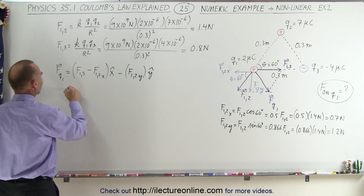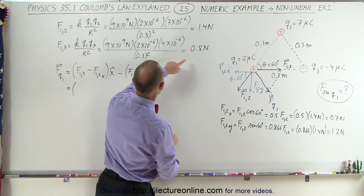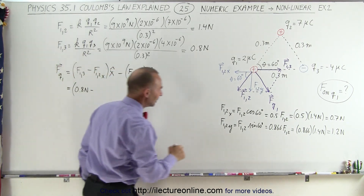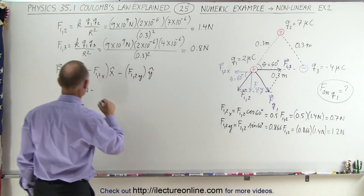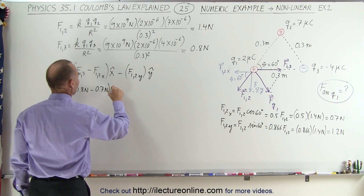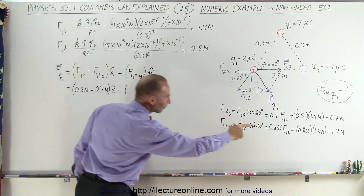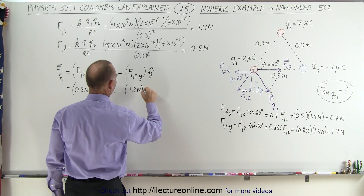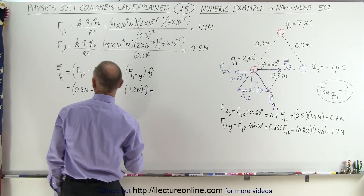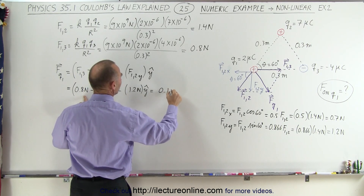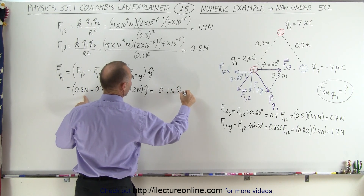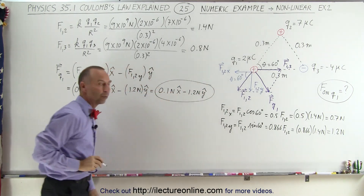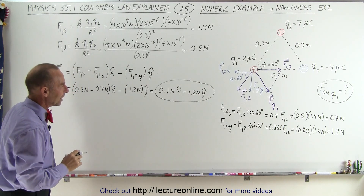Plugging in those values: F1,3 is 0.8 Newtons, minus F1,2 in the X direction which is 0.7 Newtons — that's in the X direction — minus F1,2 in the Y direction which is 1.2 Newtons. So this becomes 0.1 Newton in the X direction minus 1.2 Newtons in the Y direction. This is the resultant force on Q1 due to the presence of Q2 and Q3.